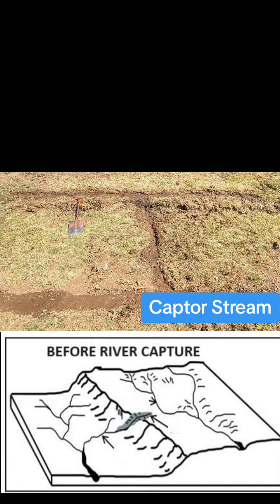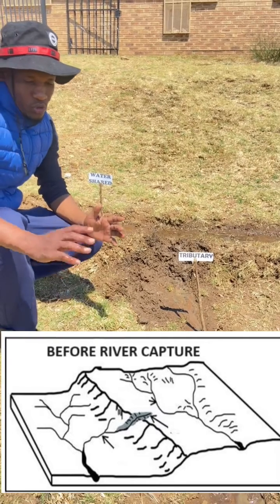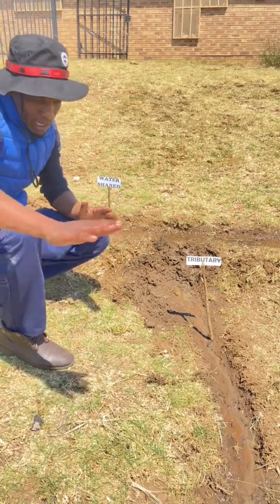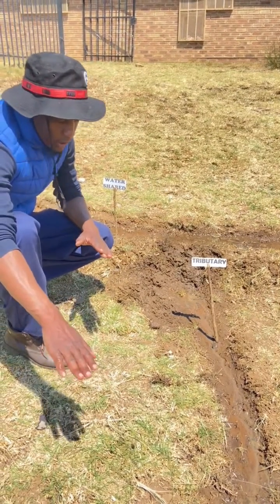These two rivers are flowing on different drainage basins, so they are separated by the watershed. Now let us look at the conditions necessary for river capture to occur.